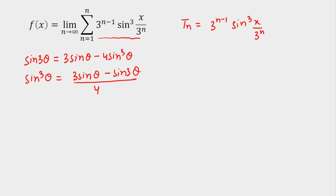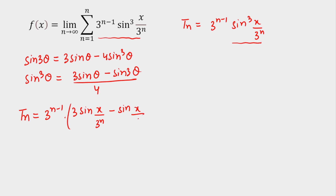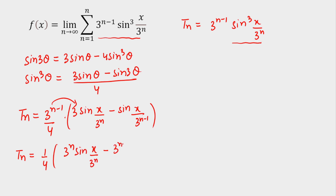Now I am going to convert the nth term using this identity. I write t(n) as 3^(n−1) outside, then apply the sine-cube formula with θ = x/3^n, so 3θ = x/3^(n−1). Taking 1/4 outside and bringing 3^(n−1) inside, t(n) becomes (1/4) times [3^n · sin(x/3^n) − 3^(n−1) · sin(x/3^(n−1))]. This is now a difference of two consecutive terms.